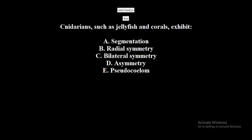Cnidarians, such as jellyfish and corals, exhibit: A. Segmentation. B. Radial symmetry. C. Bilateral symmetry. D. Asymmetry. E. Pseudocoelom. The correct answer is Radial symmetry.